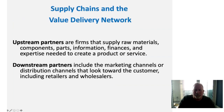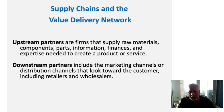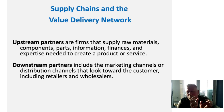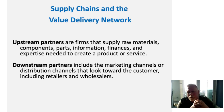Let's start off by talking about the idea of supply chains and the value delivery network. When we think about supply chains and the value brought to the marketplace, we have upstream partners and downstream partners. Upstream partners are firms that supply raw materials, components, parts, information, finances, and expertise needed to create a product or service — everything that goes into the product or service process from raw materials to every component needed to actually produce, manufacture, or supply that product downstream.